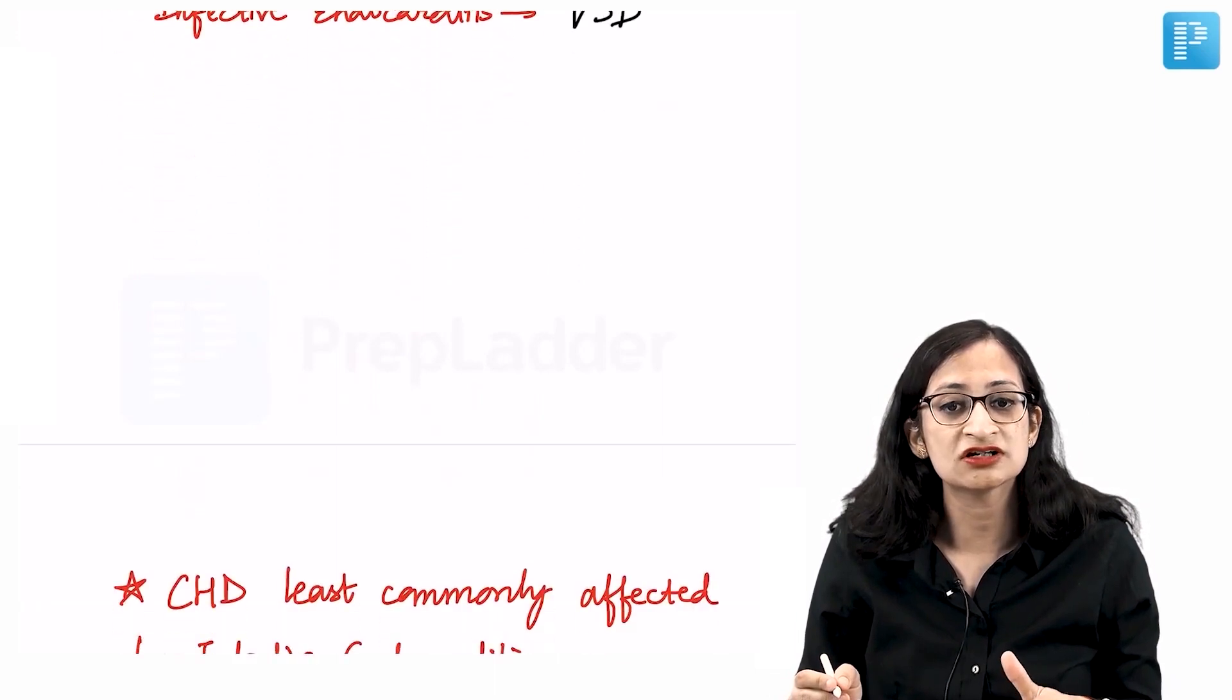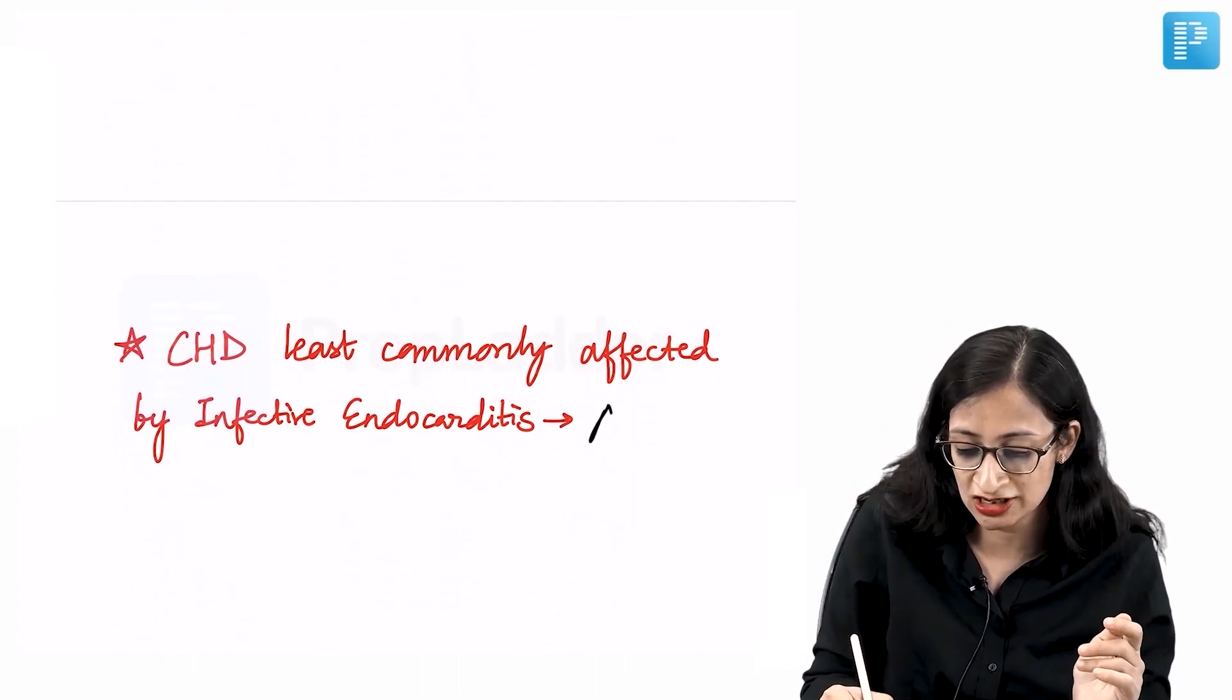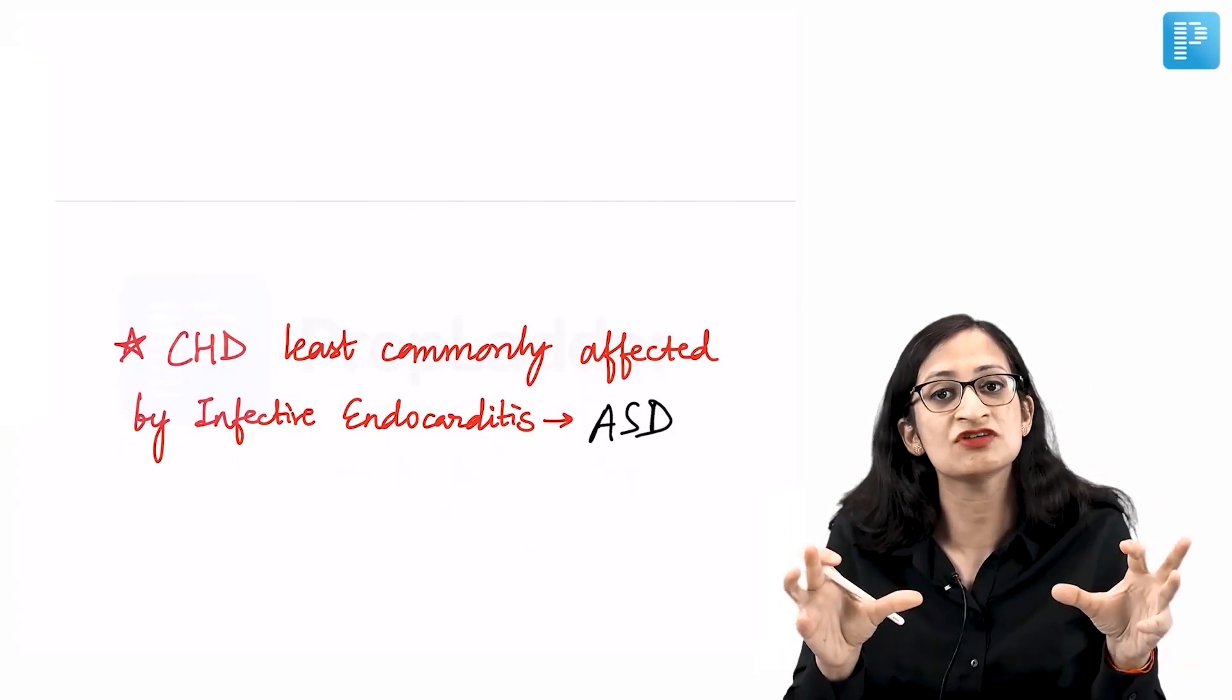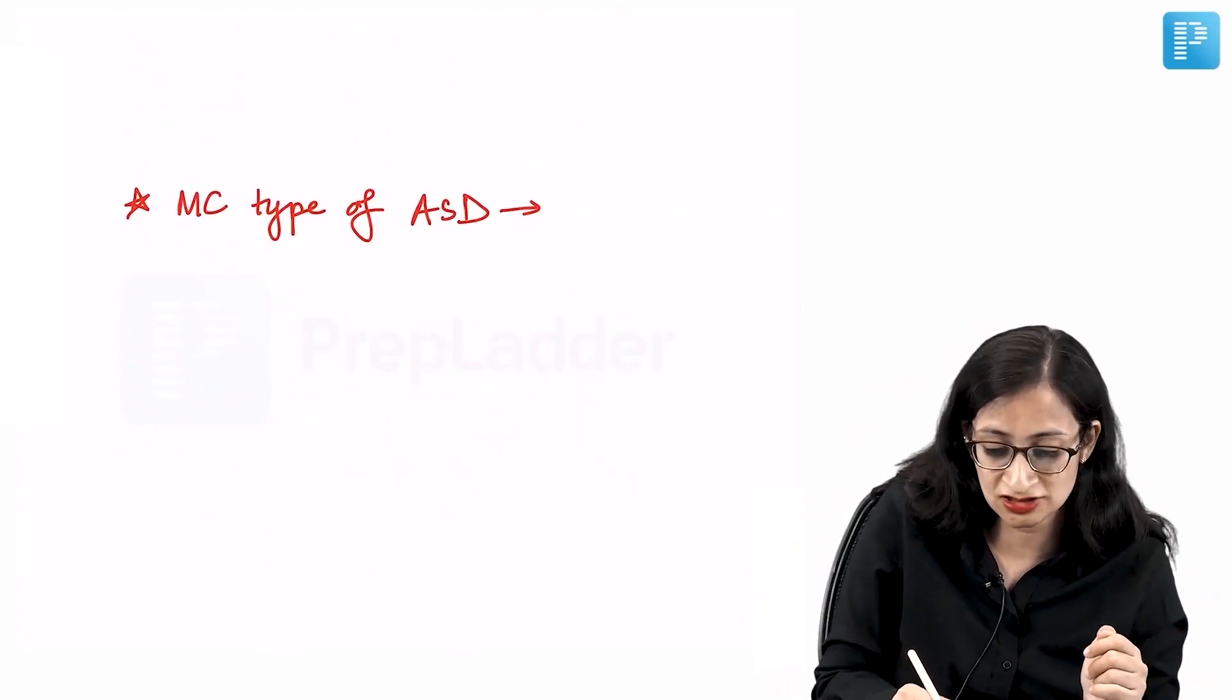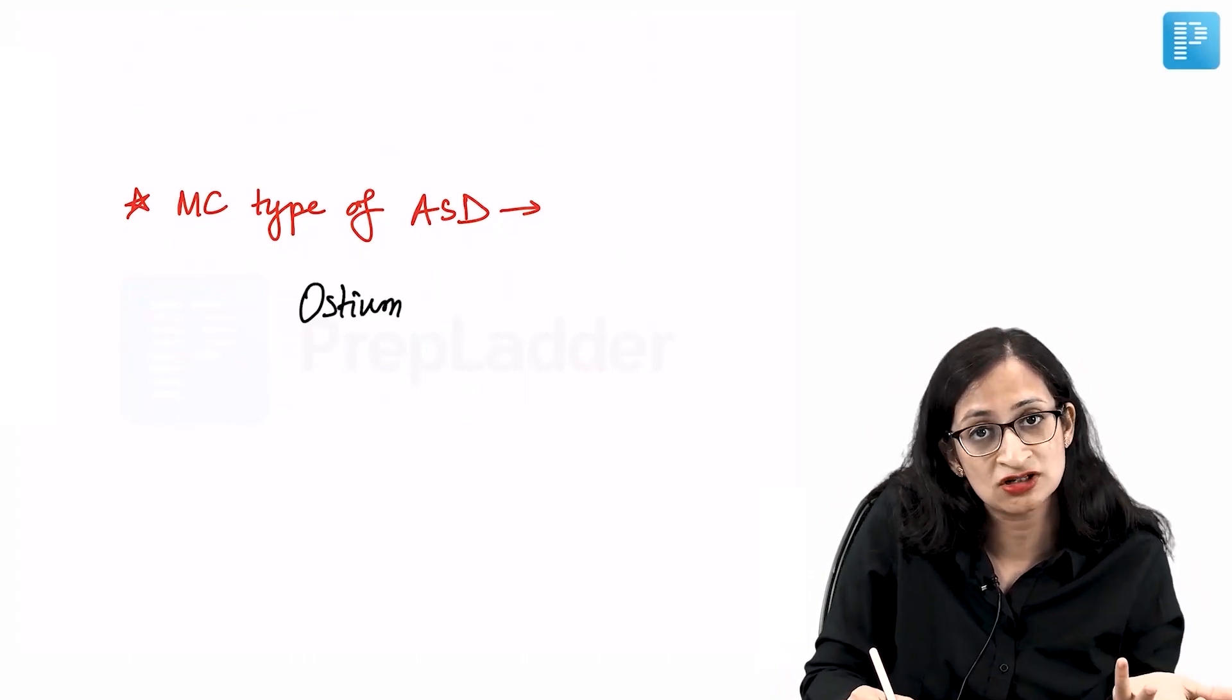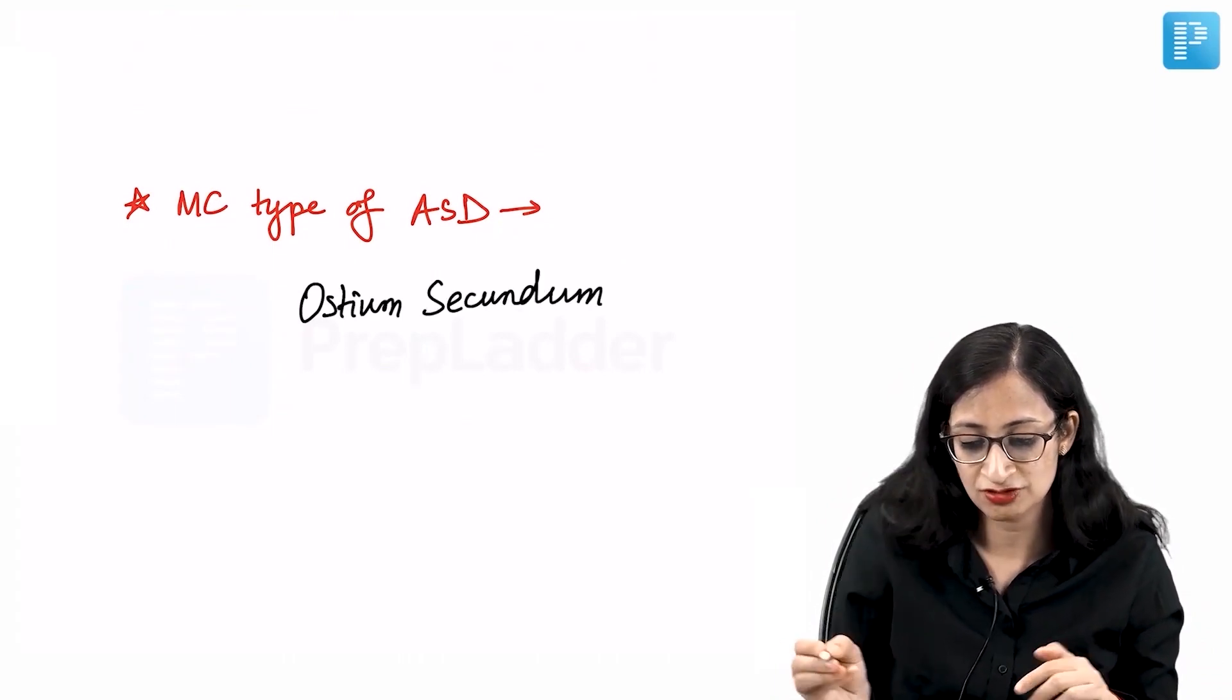The congenital heart disease least commonly affected by infective endocarditis is atrial septal defect or ASD, because the gradient across the atrial septum is very low due to minimal pressure difference between the two atria. The most common type of ASD is ostium secundum type. There is also ostium primum type and atrioventricular septal defect or endocardial cushion defect.